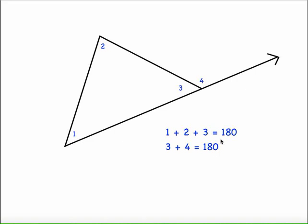Since these are both equal to 180, it follows that they're equal to each other. One plus two plus three equals three plus four. Well, what would happen if I subtracted the measure of angle three from both sides? That means the measure of angle one added to the measure of angle two would equal the measure of angle four.